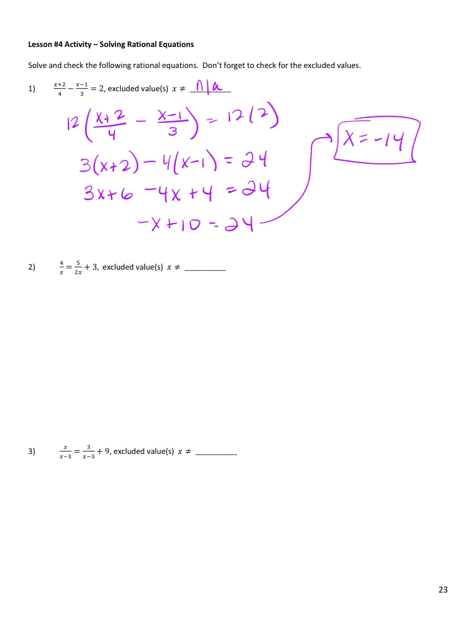Number two: the excluded value would be 0. I cannot put a 0 in either denominator or I'll get a 0 in the denominator. So if I want to clear the fractions, my common denominator for these three terms is 2x. So I'm going to multiply both sides by 2x.